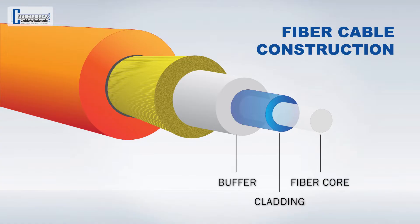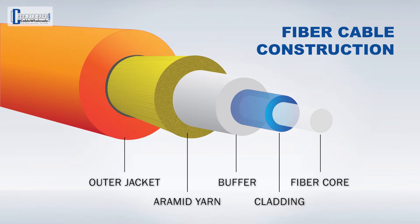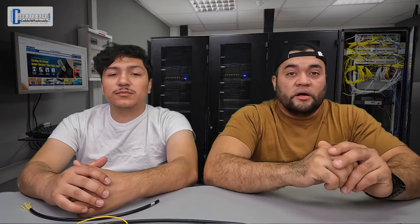The strength member helps the cable withstand physical stresses like tension and bending during and after installation. It is typically made of Aramid yarn. The outer jacket is the protective shell that encases the entire cable, shielding all the internal components from the elements and providing insulation. It is usually made from a durable material such as PVC, polyethylene, and other compounds. All these come together to give us a cable that we can rely on to transmit light signals over long distances.